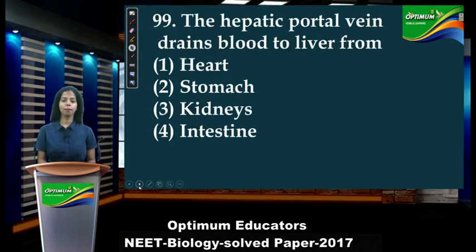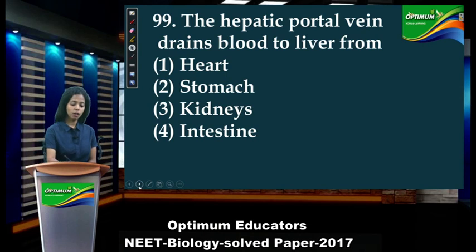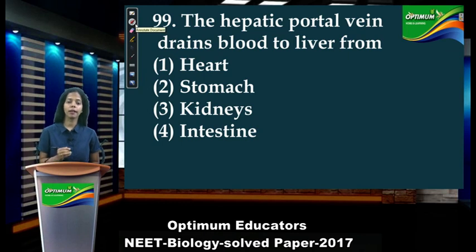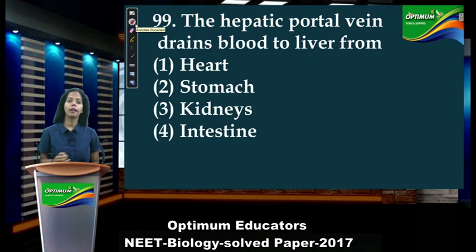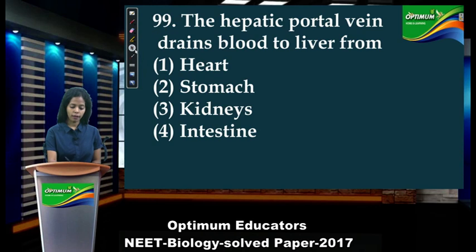Next: 'The hepatic portal vein drains blood to the liver from...' The hepatic portal vein is the circulatory structure which starts from capillary and ends into capillary. It starts from the small intestine and enters the liver. So the answer is the intestine.